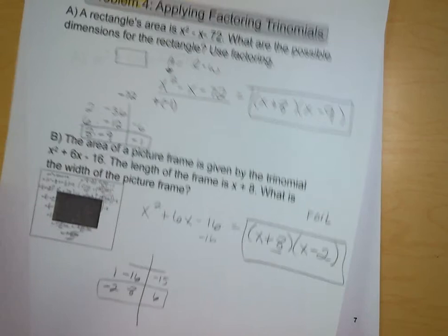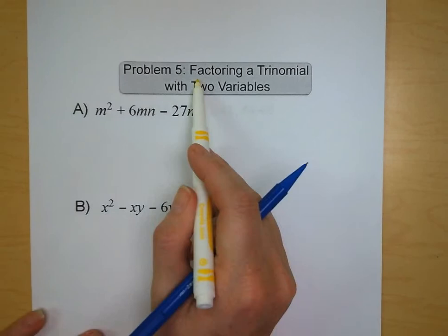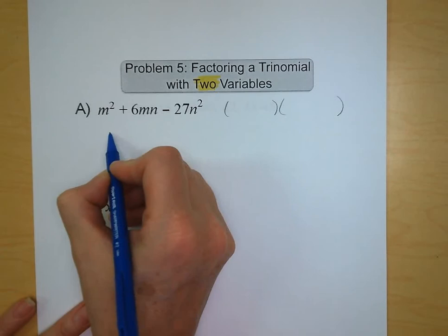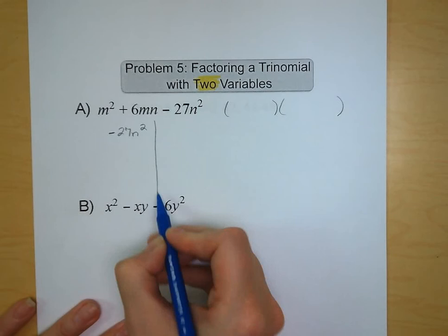Problem number 5 is factoring a trinomial with two variables. These get a little trickier, so we're going to have to take our time. Our last term, we're looking for products that are going to give us -27n² that are going to add up to 6n.